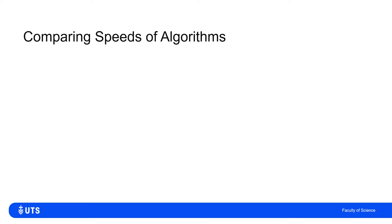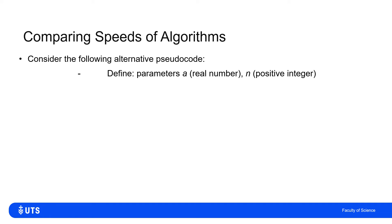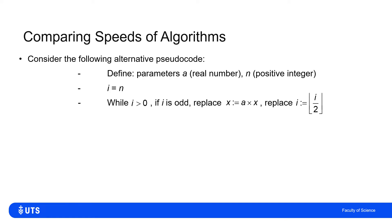I now want to introduce a very different looking algorithm, also in pseudocode. We start with the same two parameters A and N, which are a real number and a positive integer respectively. I start by setting an index I to be equal to whatever I set the parameter N to be. Then while I is positive, there's a check: if I is odd, I multiply X by A and make that my new X. I replace X with A times X, and I replace I with the floor of I over 2. The floor function rounds a real number down to the nearest integer.